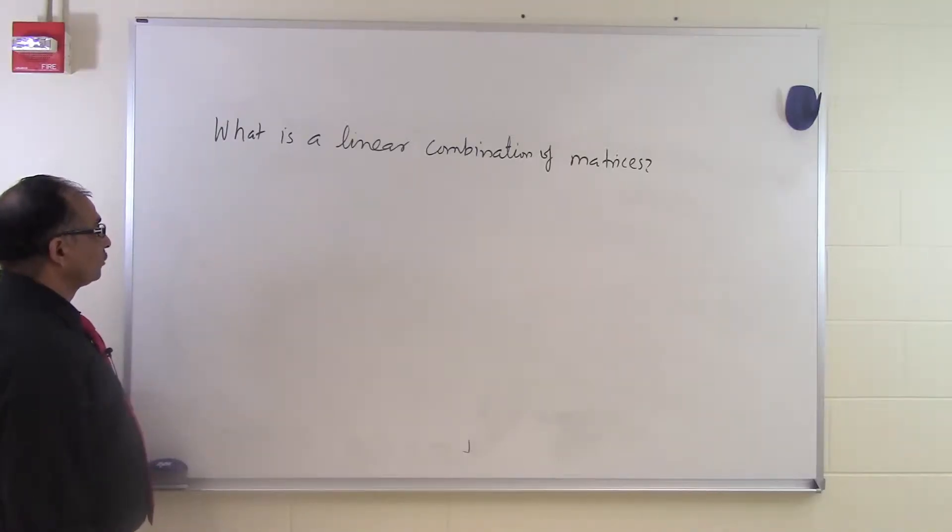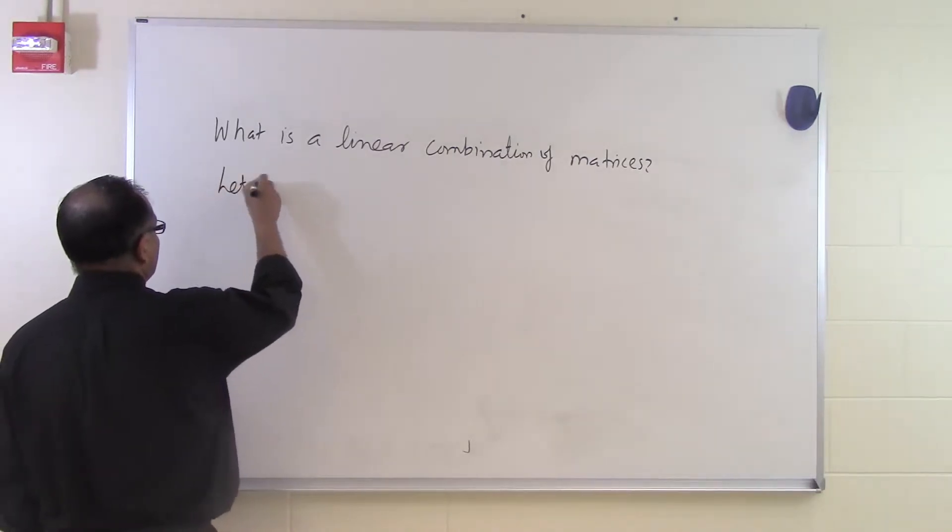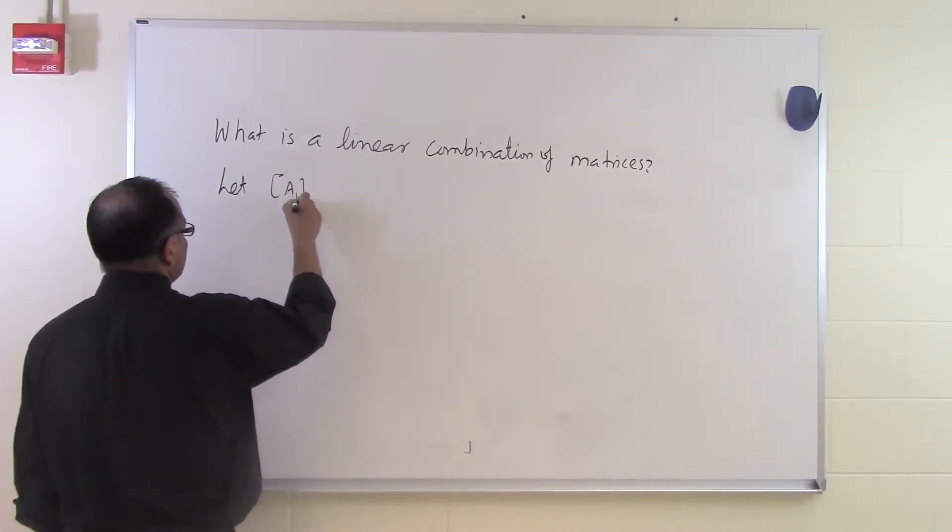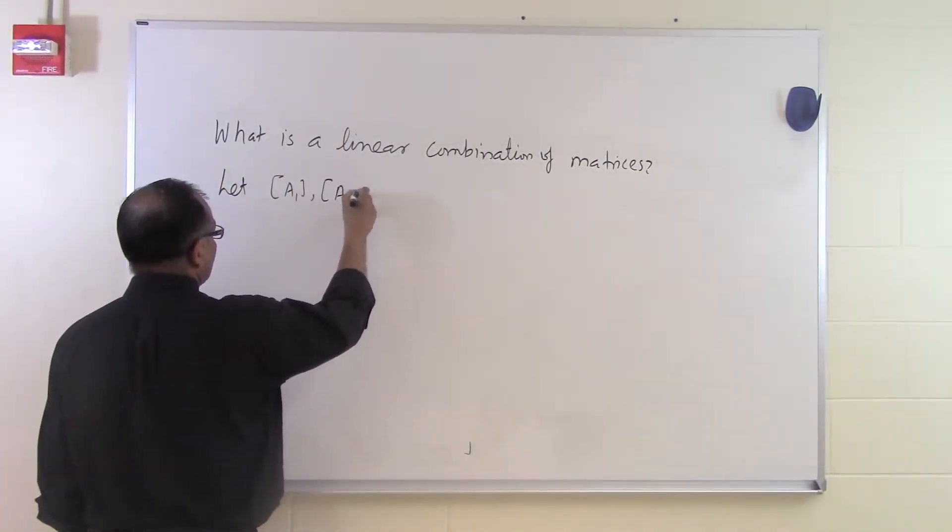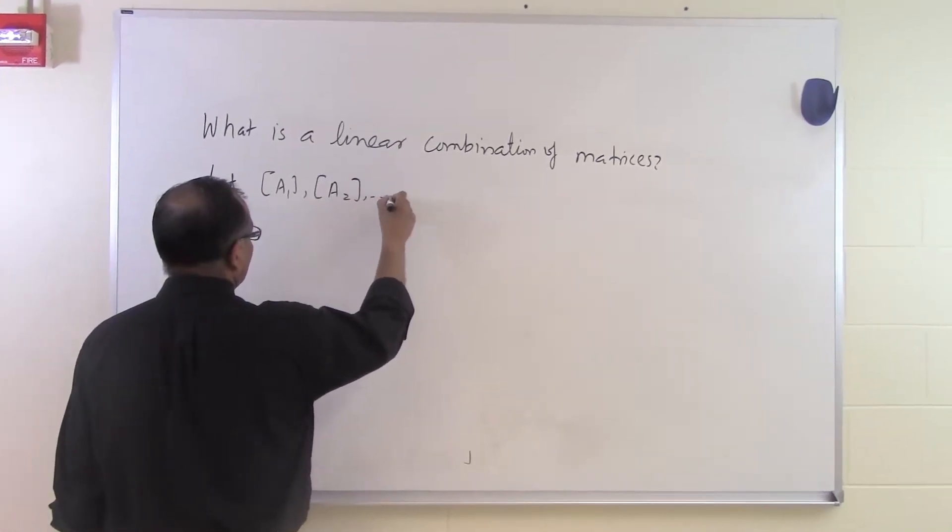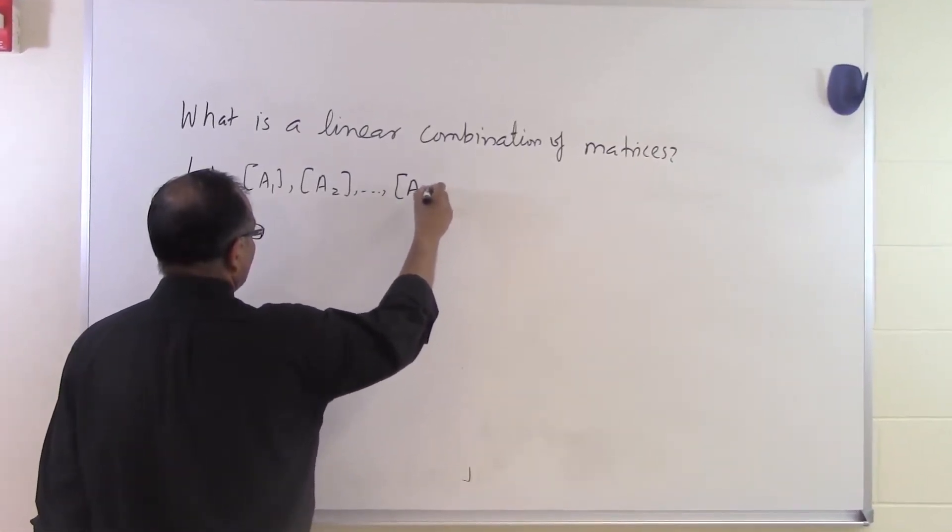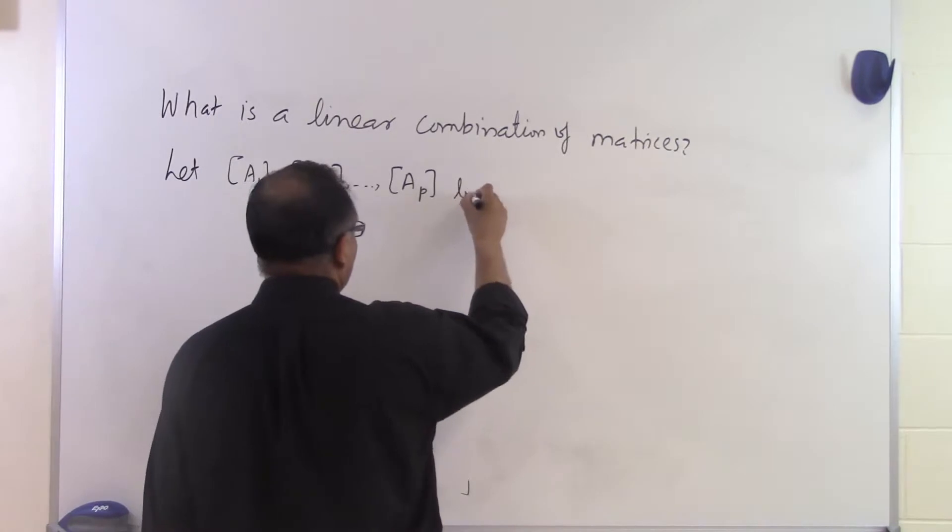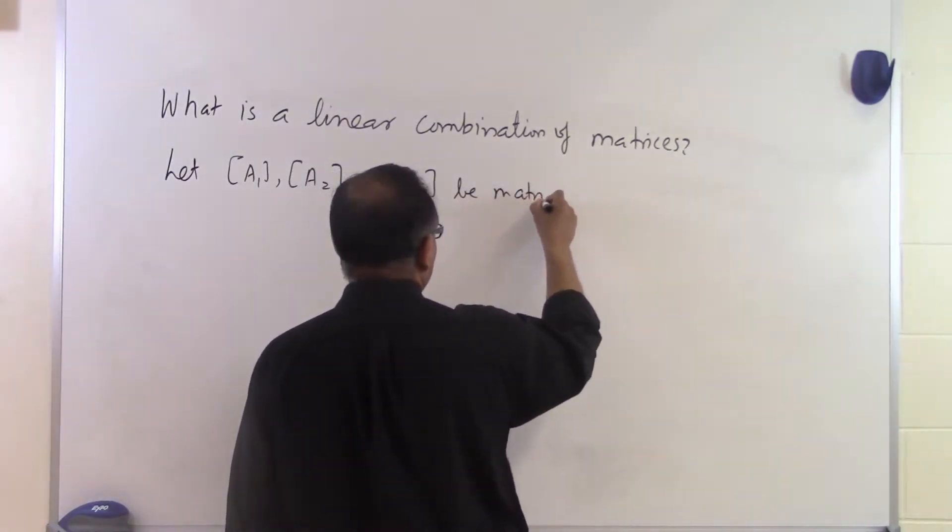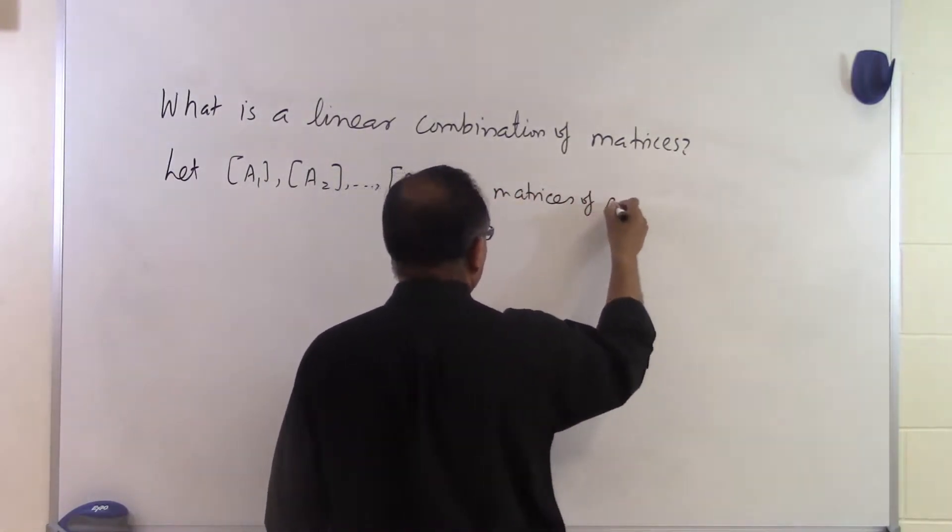In this segment, we'll talk about what is a linear combination of matrices. So let A1, A2, all the way up to AP, let's suppose, be matrices of same size.